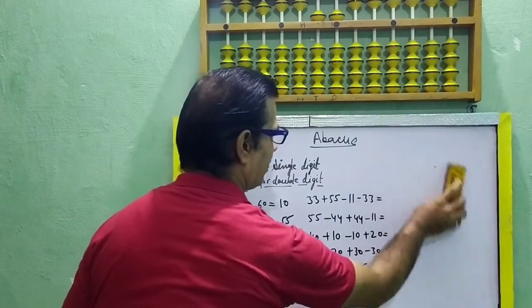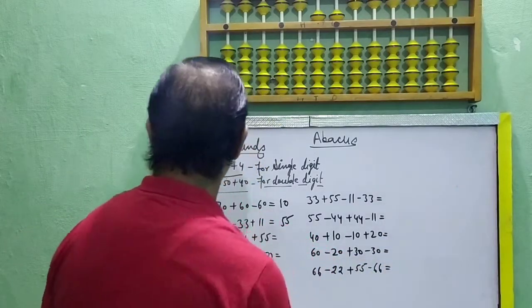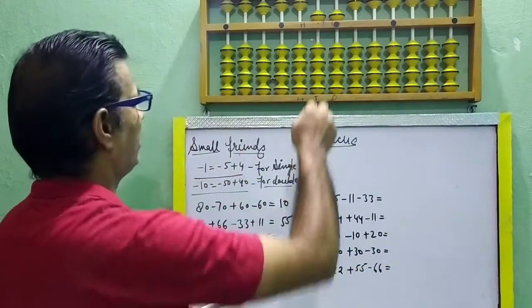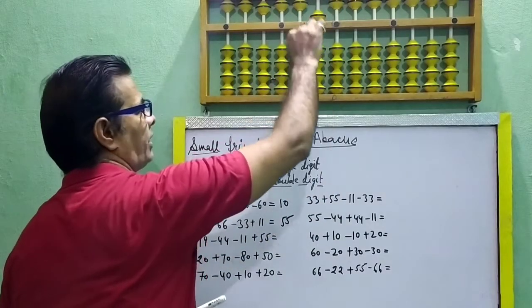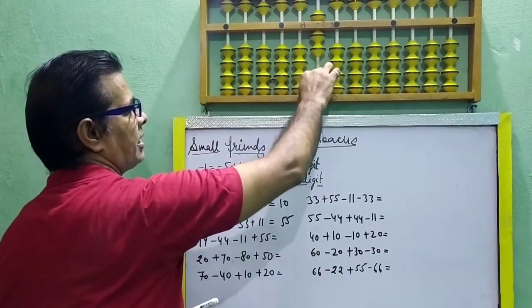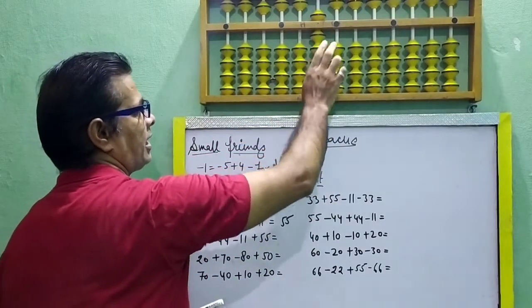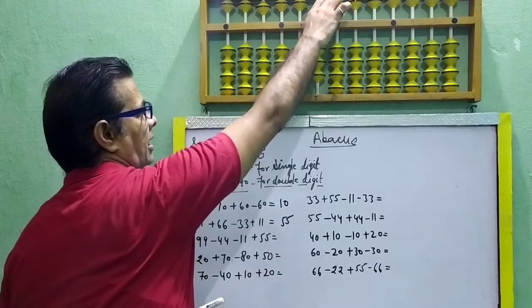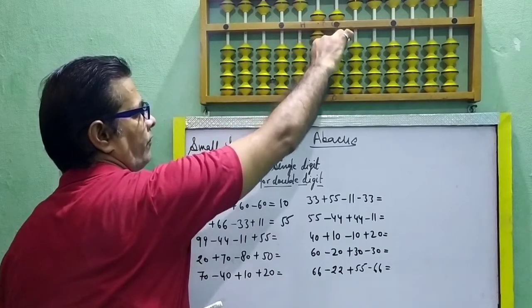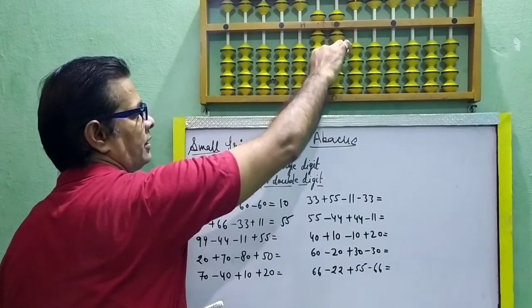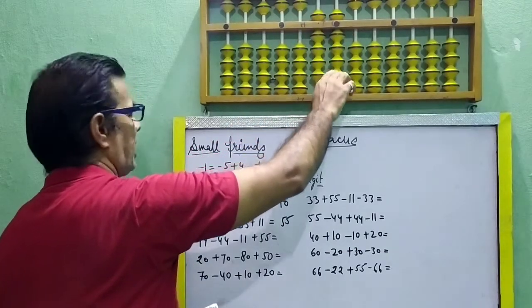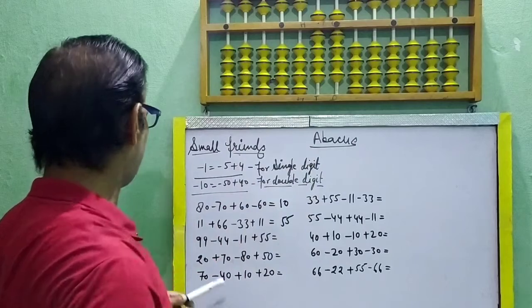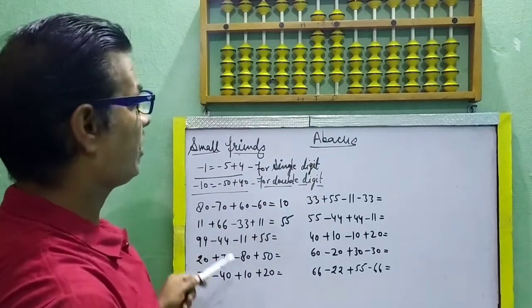Next question: 99. Direct 99 — 50, 60, 70, 80, 90 and then 5, 6, 7, 8, 9. 99.